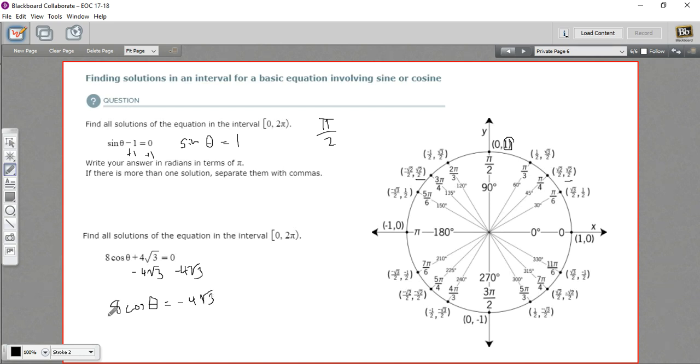And then we're going to divide by 8 to solve for the cosine. This is going to give me the cosine of theta on the left because the 8s cancel. And on the right, this 4 will cancel. This will become a 2. We get negative √3 over 2.